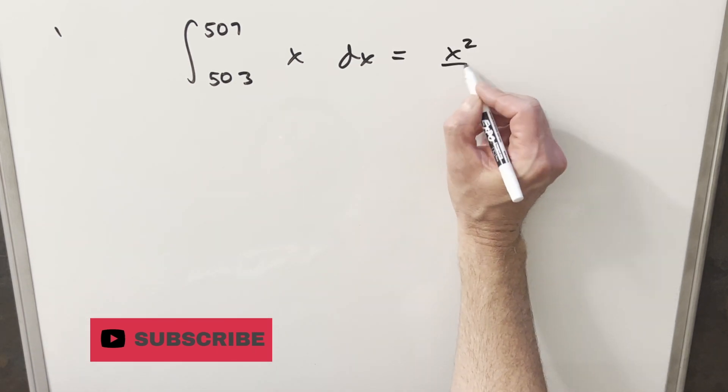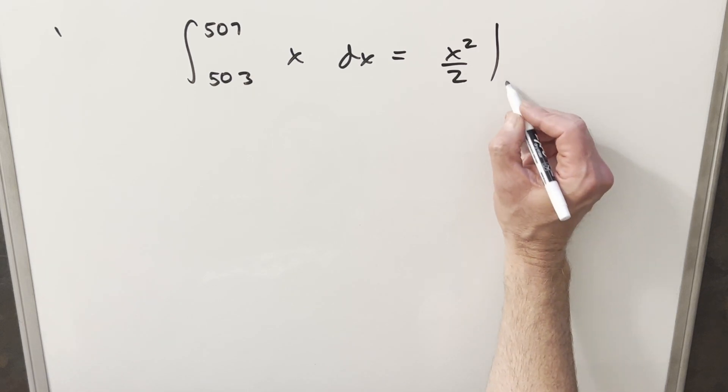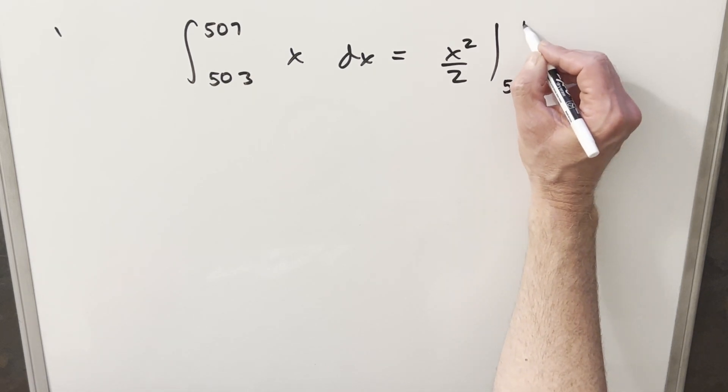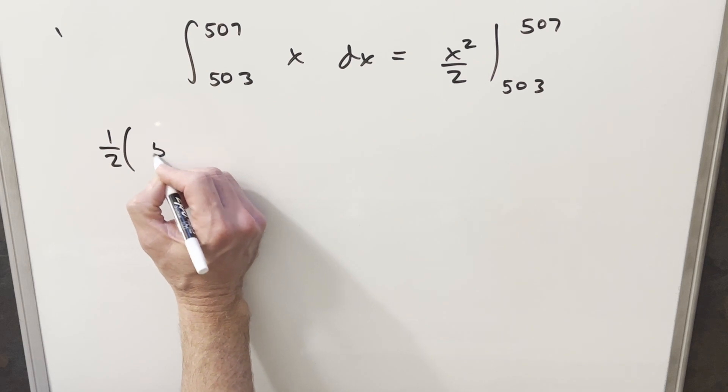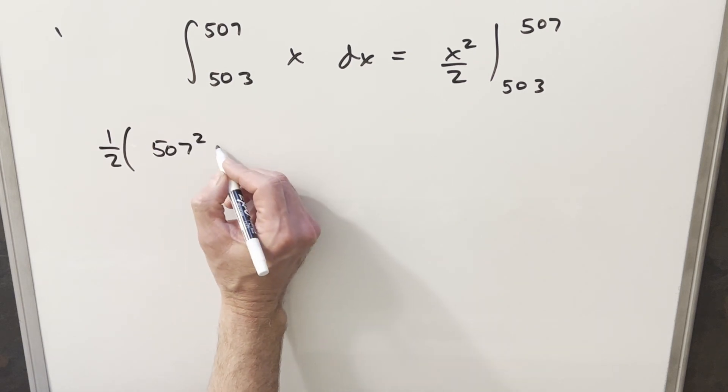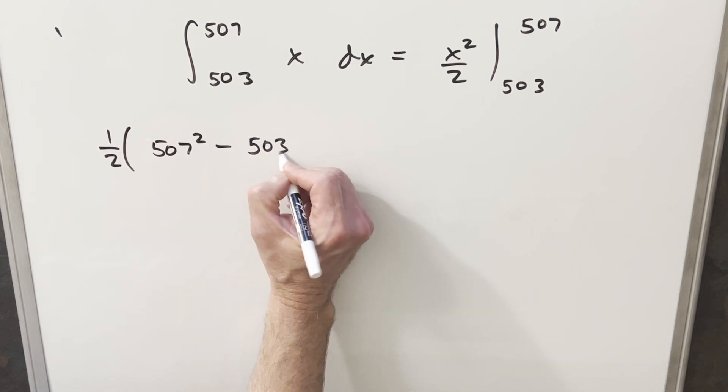This is just going to be x squared over two, but we're asked to evaluate it from 503 to 507. Well, let's just see what happens. So I can factor a one-half out front and then we'll evaluate. Plug in 507, we have 507 squared minus 503 squared.